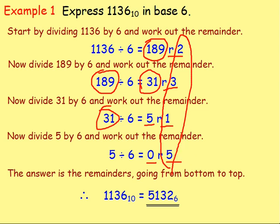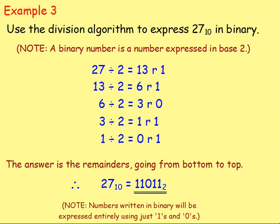Which means, for the answer to 1136 base 10 written in base 6, all you do is take the remainders and go from the bottom to the top. So that will be 5, 1, 3, 2 base 6.